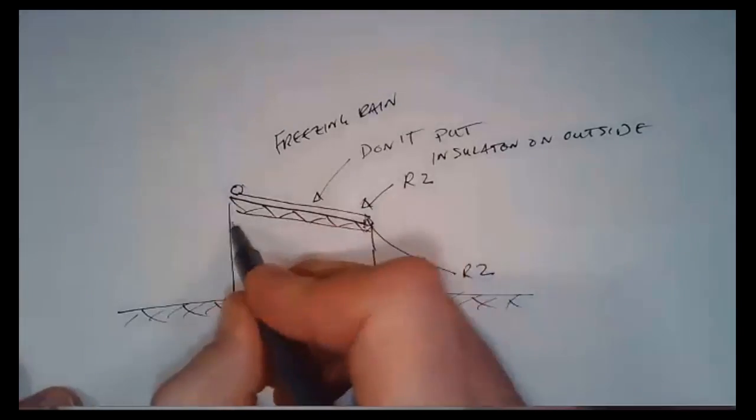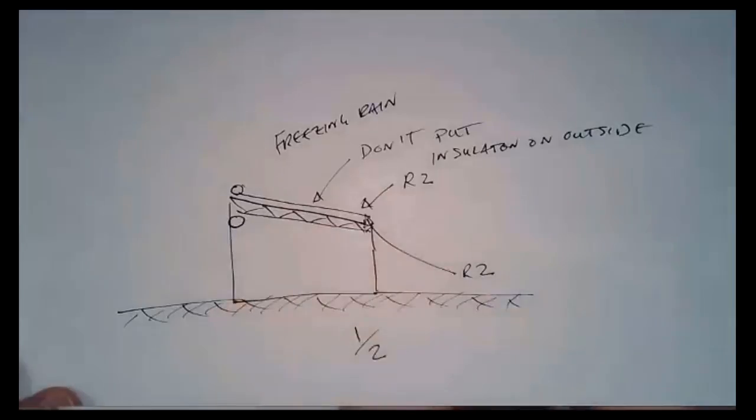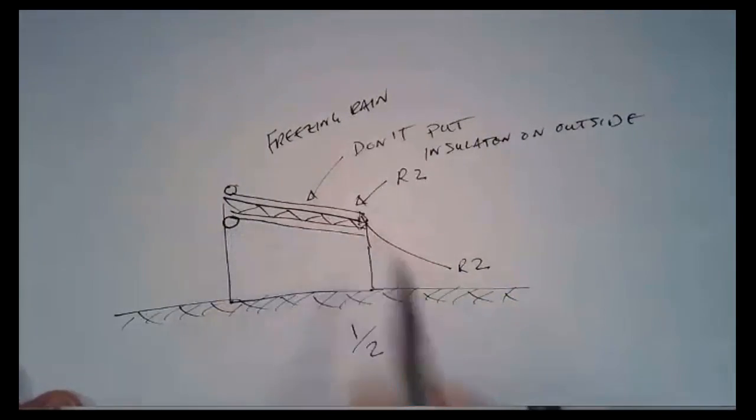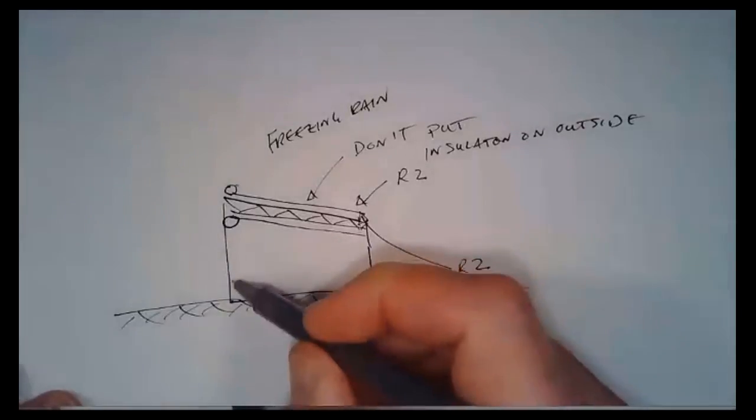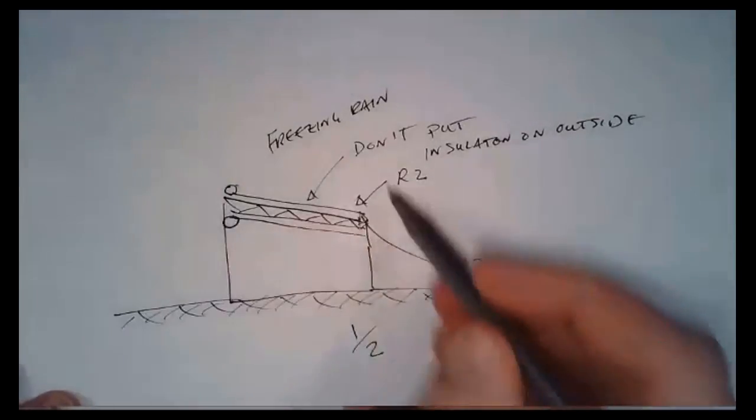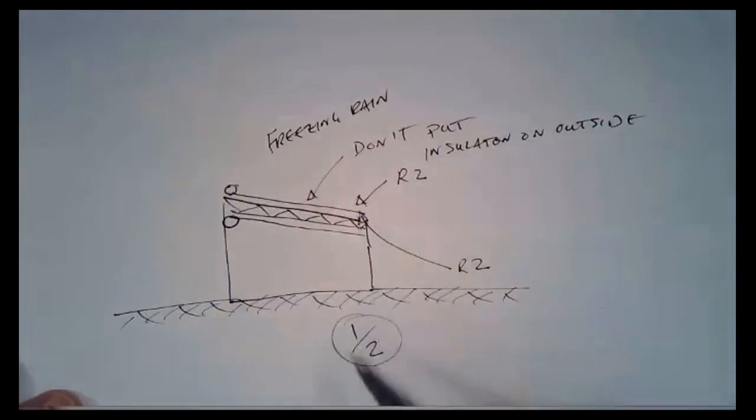So you're far better off to have an insulated tarp on the inside and then run it along the trusses on the bottom, which then keeps the heat in and again doubles the insulative value and therefore halves the heat loss coming out of the greenhouse itself.